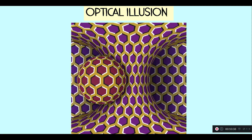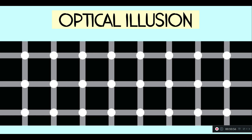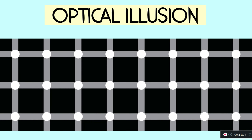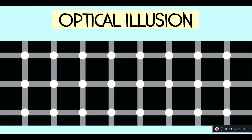If you look at this image, it seems to be moving, but actually it is not. Here's another example. As you can see, there are black boxes with white spots in between them. But when you look at the spots on the left side, you notice that the spots on the right will become black. But when you look at the spot on the right side, the spots on the left side become black. This is what we call optical illusions.